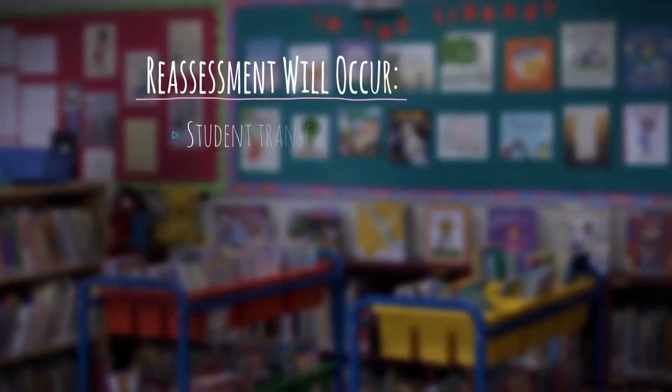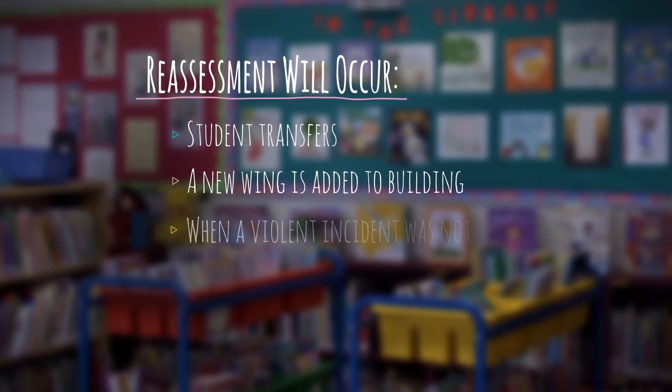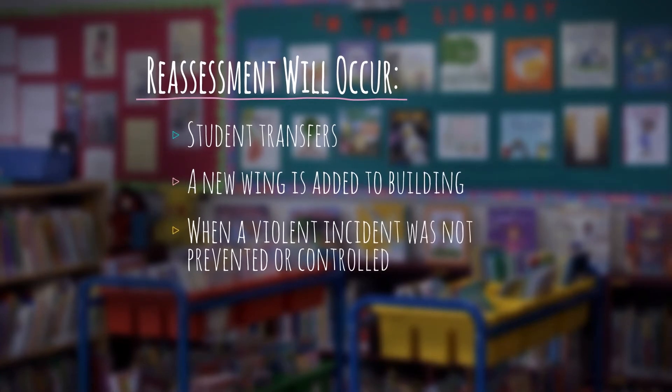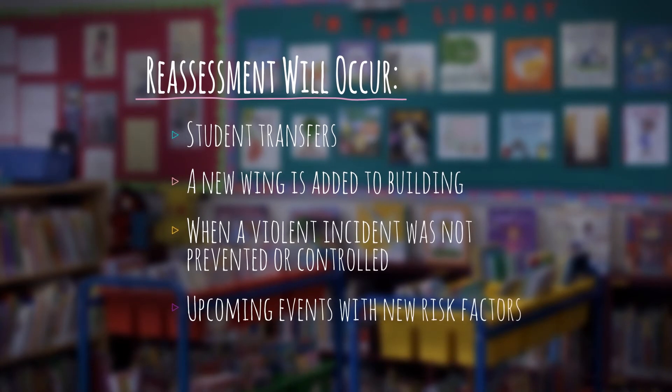Our school boards must also review the risks of violence as often as necessary to continue protecting staff, particularly when things change. For instance, when a student with a history of violence transfers to a new school or classroom, if a new wing is added to the building, when a violent incident was not prevented or controlled, or when an upcoming event introduces new risk factors.